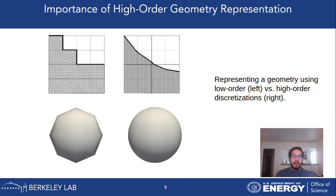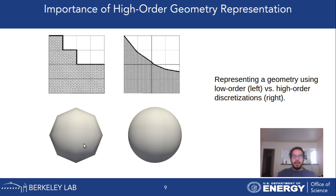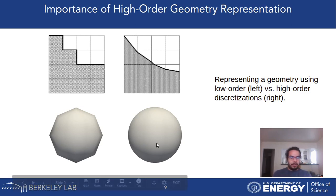The importance of high-order geometry representation is illustrated here. With a low-order representation in 2D you get a stair-step function, and in 3D a sphere looks faceted. With high-order representation and high-order computed moments, the geometry looks much closer to reality — much closer to the actual geometry over which we want to run simulations. This is crucial for achieving accurate, stable, and conservative solutions.